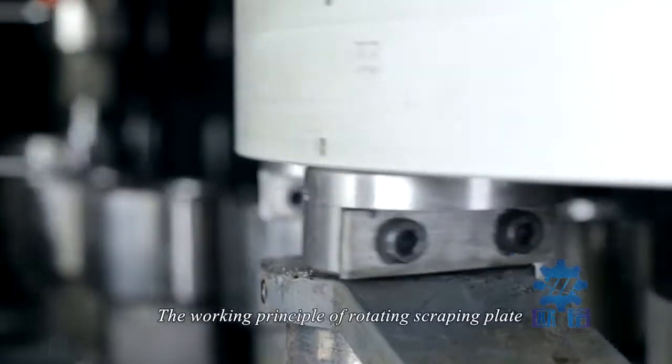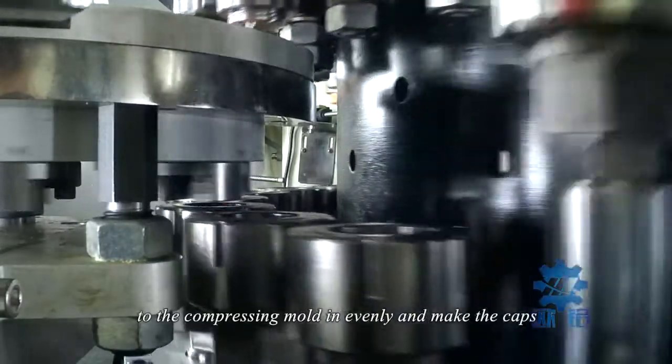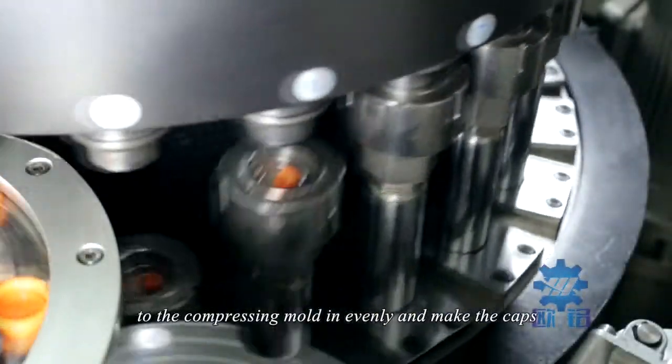The working principle of the rotating scraping plate is to transfer the raw plastic material to the compression mold evenly and make the caps.